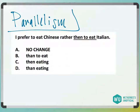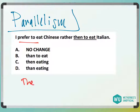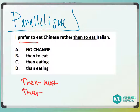So when we make comparisons, I prefer to eat Chinese rather than to eat Italian. First of all, T-H-E-N is like 'next', while T-H-A-N is for comparison.